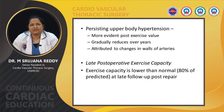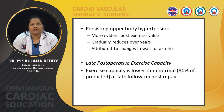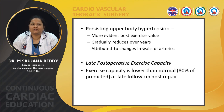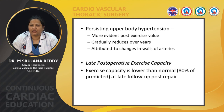Several studies have shown persisting upper body hypertension attributed to proximal artery wall changes. It is more evident on post-exercise testing compared to at rest and gradually reduces over years. Late postoperative exercise capacity is usually lower than normal, at about 80% of the predicted value.